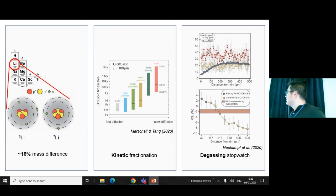In this case from left, lithium is quite a small cation and it has two stable isotopes which has a great mass difference to be affected by kinetic fractionation. A lot of people have been using lithium to track fast diffusing processes like degassing or magma mixing.